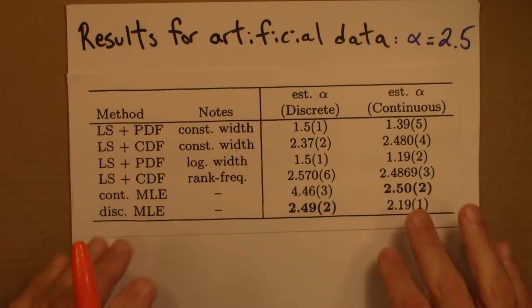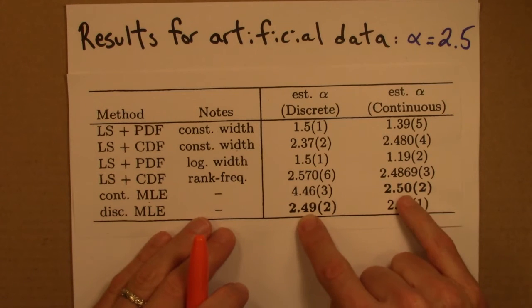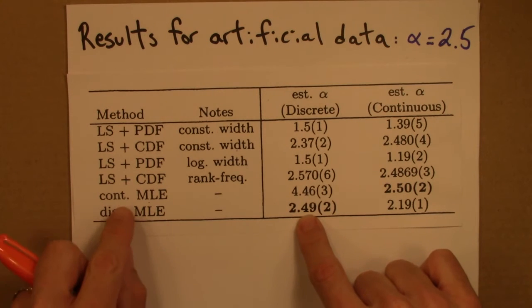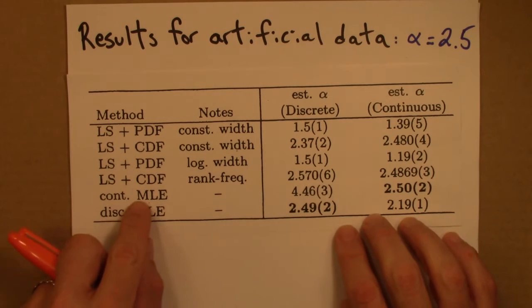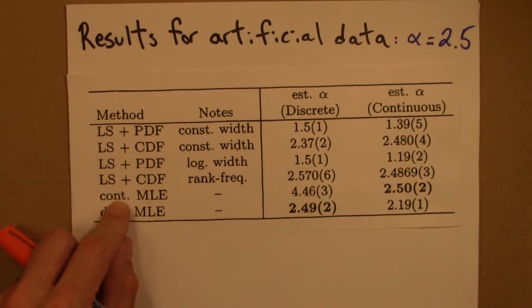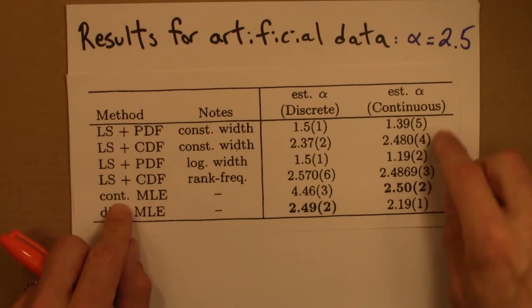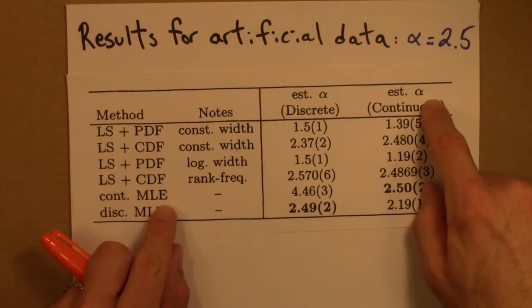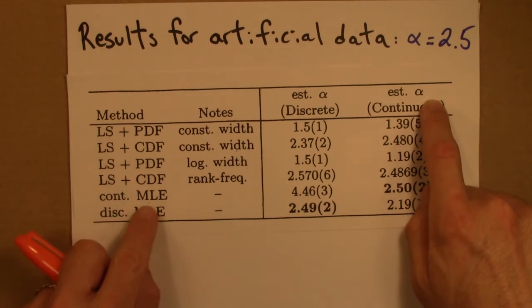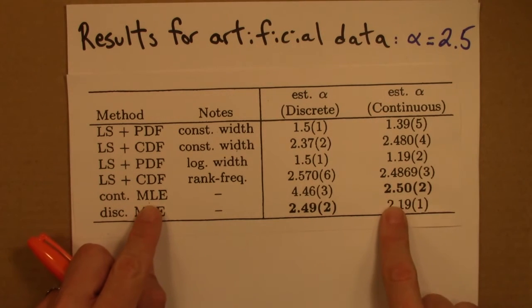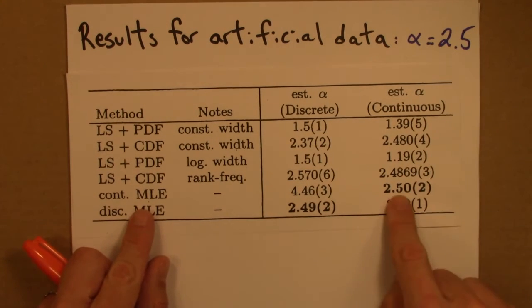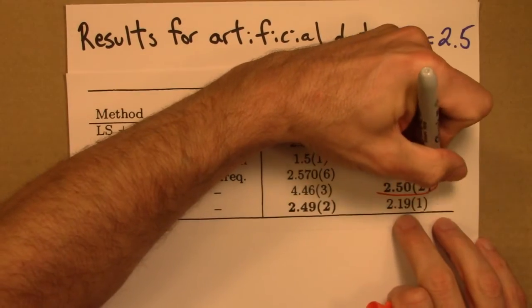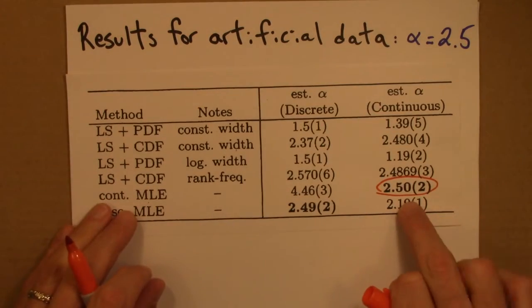And the main thing to note, so the results in bold are the ones that are accurate. So MLE is maximum likelihood estimator. So for the continuous case, that's the one I've been describing. If you have continuous data and you estimate the alpha with the appropriate formula for continuous distribution, you get 2.50 plus or minus .02. And that's consistent with the true value. So this here, which is in bold, I'll circle in orange just to make it even clearer. This is an accurate result.